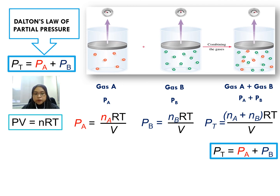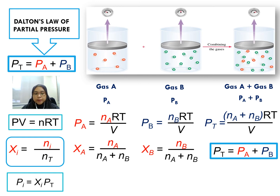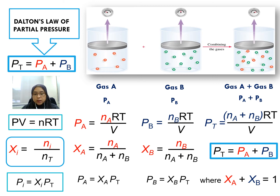Besides using PV equals to nRT, we can also calculate partial pressure using mole fraction: Xi equals to ni over n total. So XA for gas A is NA over (NA plus NB), and XB is NB over (NA plus NB). Using Pi equals to Xi times Pt, we get PA equals to XA times Pt and PB equals to XB times Pt, where XA plus XB equals 1.